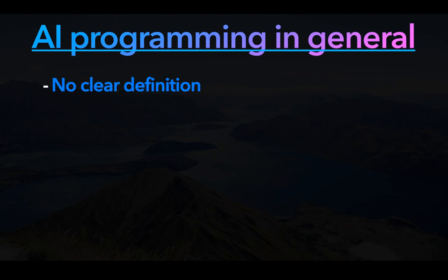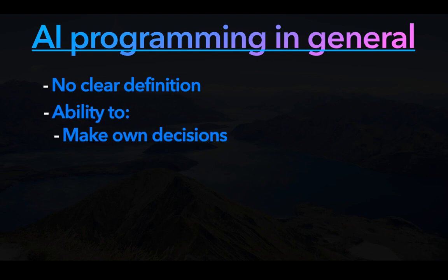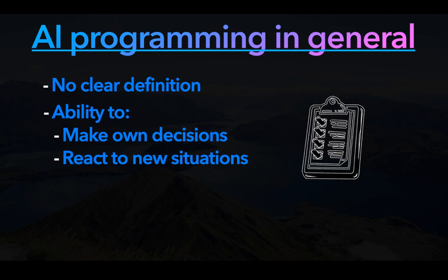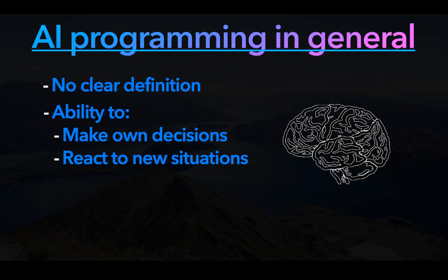There actually is no clear definition of what counts as an AI and what doesn't. But in general, there should be no need to describe every situation. The program should be able to make its own decisions, even for new situations that you haven't described — so that it does not follow a simple to-do list, but is actually a bit closer to something like intelligent.